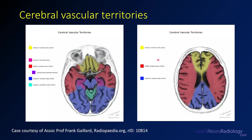You need to be familiar with cerebrovascular territories. The ACA territory is anterior and along the midline. The PCA territory is posterior and along the midline. The MCA is in the middle. As you go higher, the MCA makes up a wedge — the largest portion of the cerebral hemisphere — with ACA anteriorly and PCA posteriorly. If you see a pathology in a territory like this, you should be thinking about an underlying vascular lesion such as stroke.